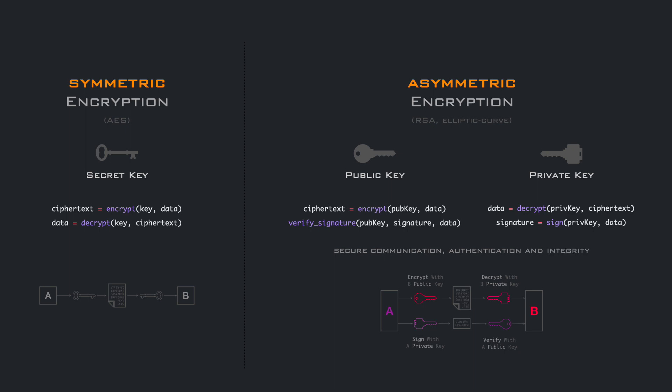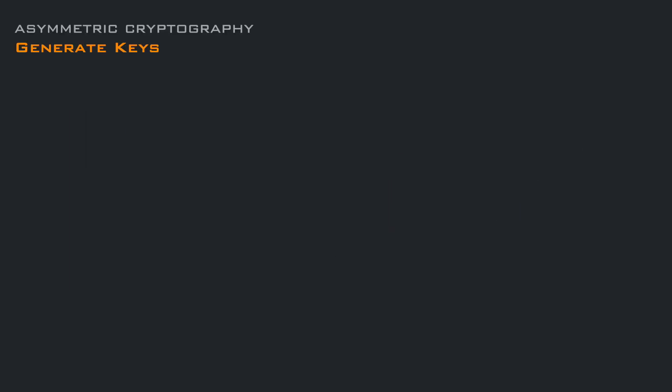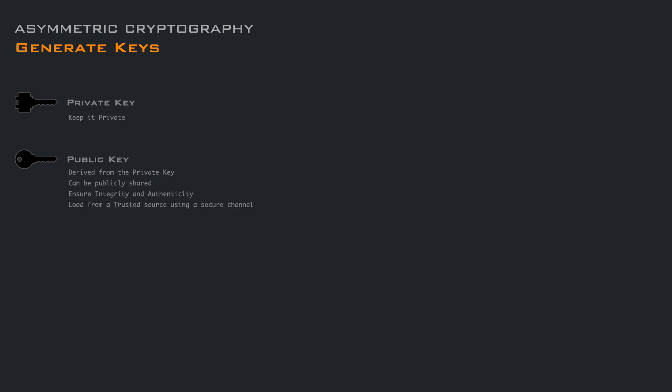Let's dive into the code, starting with key generation. The process involves creating a pair of keys. The keys are mathematically linked, but computationally difficult to derive one from another. The private key is generated first, and then the corresponding public key is derived from it. Once the keys are generated, the public key can be distributed to others. It is important to ensure the integrity and authenticity of the public key during distribution, to prevent tampering and impersonation. For now, let's say that using a secure channel like SSH or TLS is enough.